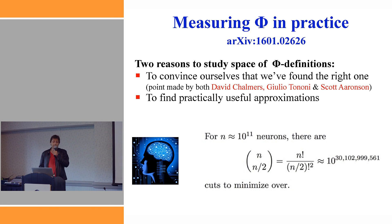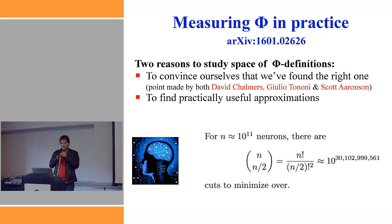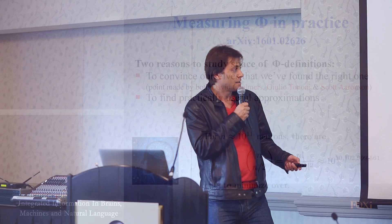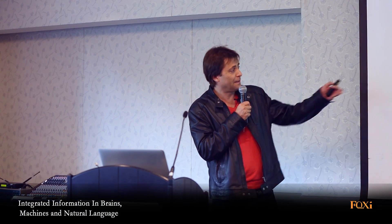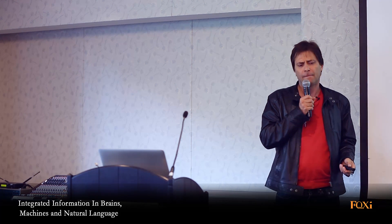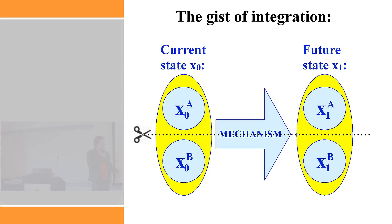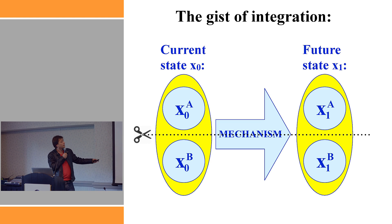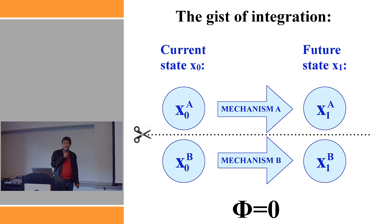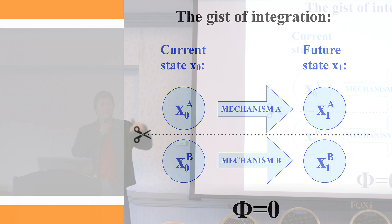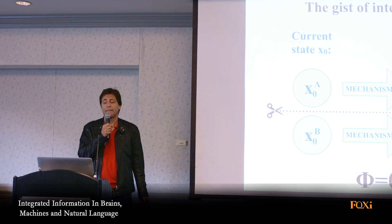You might want to do it to convince yourself that you found the right formula, and you might also do it in the hope that you can find really good approximations so we can put these theories to test. The gist of integration that we would want any definition of phi to obey is: if you have a system that evolves in time according to some mechanism, and you can cut the system in such a way that the two parts still give the same prediction even when they don't talk to each other, you say there's no integration - phi equals zero. Any measure should satisfy that.